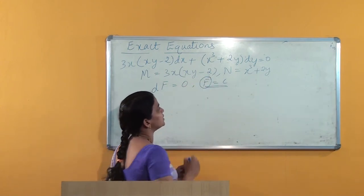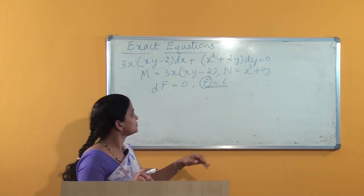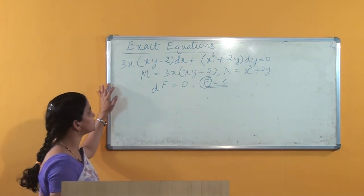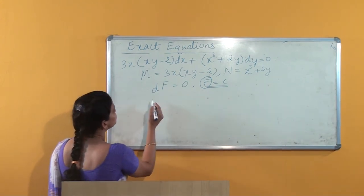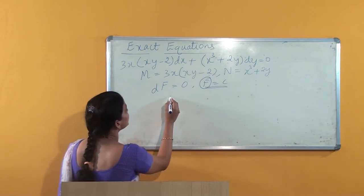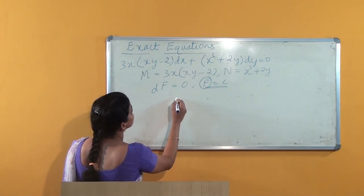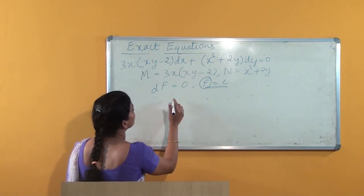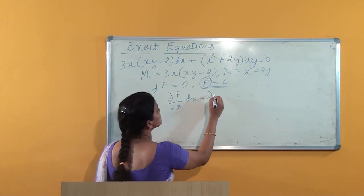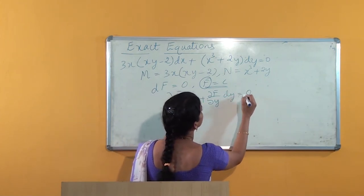So we need to find this f. Suppose f = c is the required solution — we need to find f. So we have f = c; differentiating, we get the total derivative of f, which is nothing but ∂f/∂x dx + ∂f/∂y dy = 0.